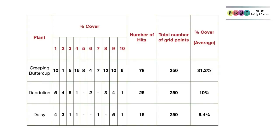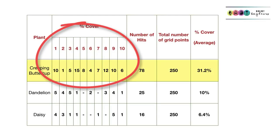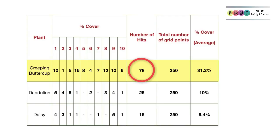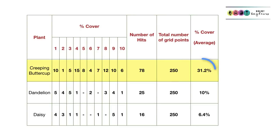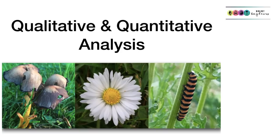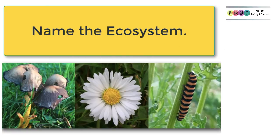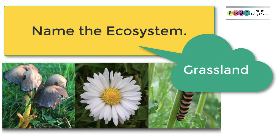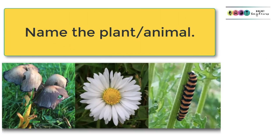Here is a possible table for percentage cover. Looking at Creeping Buttercup, there are 10 columns representing each of the 10 throws of the quadrat, and the number of hits is recorded in each. There was a total of 78 hits out of a possible 250, giving 31.2% coverage. Two classic omissions in these questions: students forget to state the name of the ecosystem they are discussing, and they also forget to name the species.